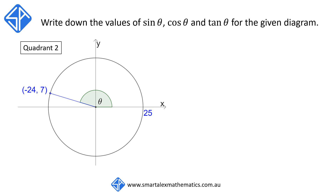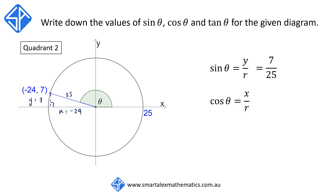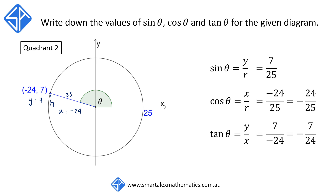In our next example, the angle theta is in quadrant 2. We construct a right angle triangle again. The y value is 7, whilst the x value is negative 24, since we're in the second quadrant where x values are all negative. The radius is 25, so the hypotenuse is 25. Using the definitions: sine theta equals y over r, giving 7 over 25; cos theta equals x over r, giving negative 24 over 25; and tan theta equals y over x, giving negative 7 over 24. In the second quadrant, only sine is positive, whilst cos and tan are negative.